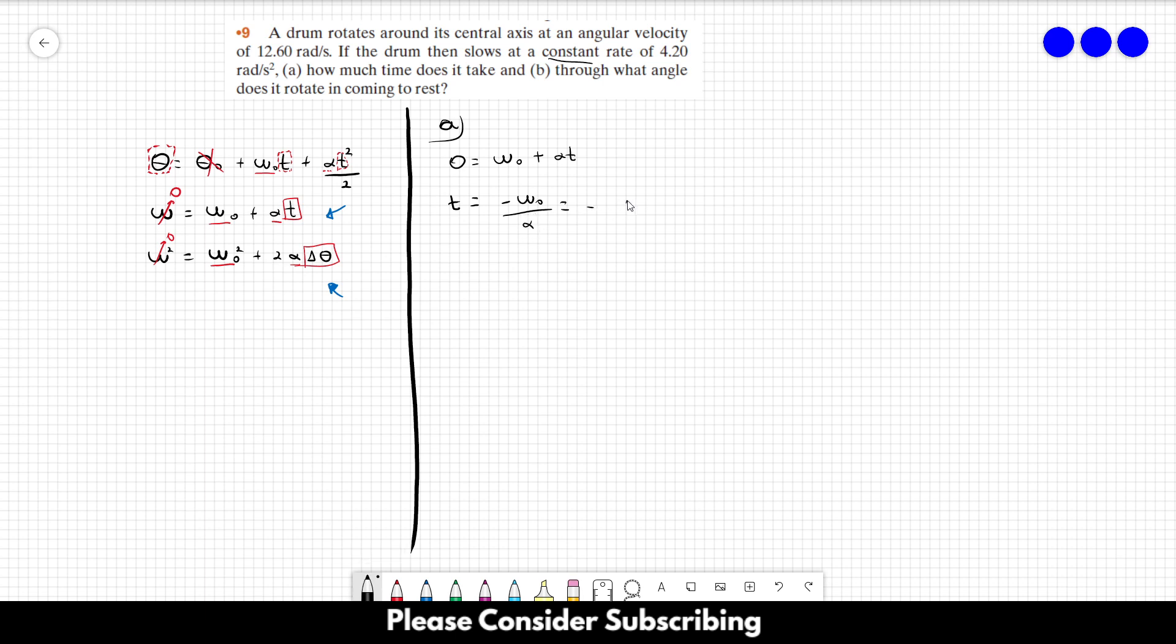So this is going to be minus 12.6 over the acceleration. However, take into account that the acceleration is slowing down the drum, so it is a negative angular acceleration. So minus 4.2, and this is going to be equal to 3 seconds. So that's the answer of letter A, 3 seconds.